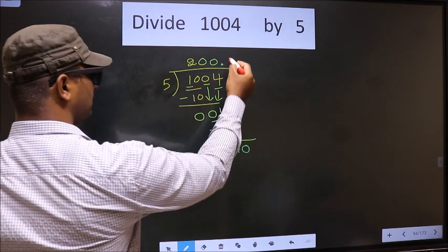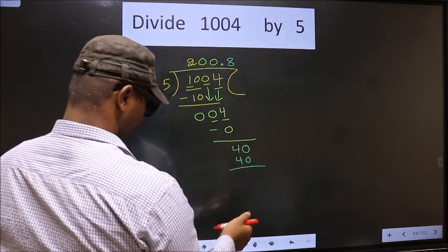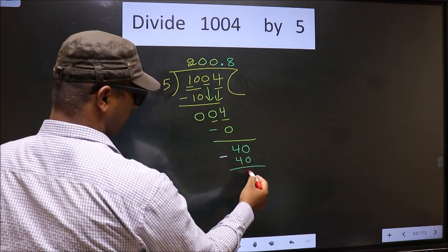When do we get 40 in the 5 table? 5 times 8 is 40. Now you subtract. You get 0.